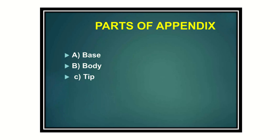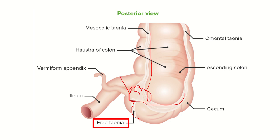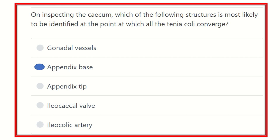The parts of the appendix are the base, body, and tip. This is the vermiform appendix — here is the tip, then the body, then the base. The taenia coli are clearly visible converging at the base of the appendix, so our answer is the appendix base.